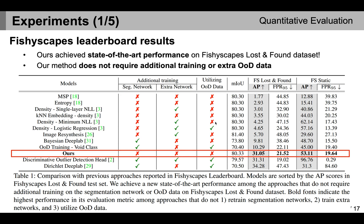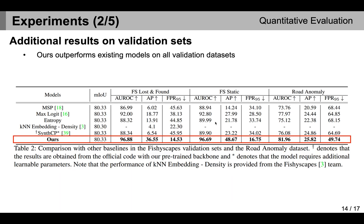Now let me talk about the quantitative evaluation of our work. We achieved state-of-the-art performance on Fishyscapes' Lost-and-Found dataset. We want to emphasize that our method does not require additional training or extra OOD data, which were necessary for most of the previous methods. Such a result is also available on the Fishyscapes leaderboard. We also outperformed the baseline models on the validation datasets of Fishyscapes and the Road Anomaly, another dataset used in this field.